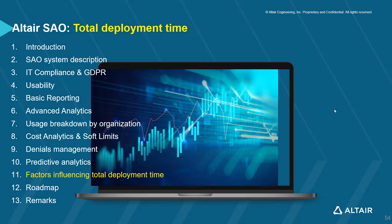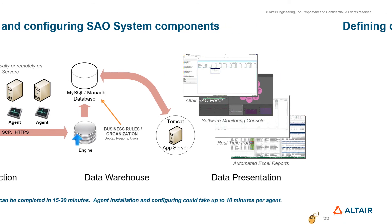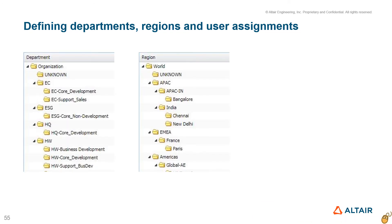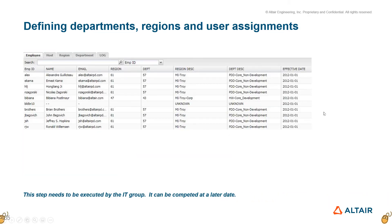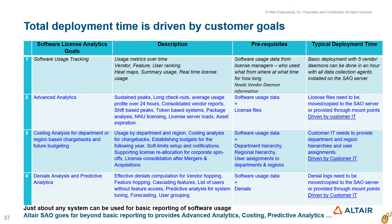A typical server installation and configuration can be completed in 15 to 20 minutes. An agent can be installed and configured in about 10 minutes. Time taken to define departmental and regional hierarchies is driven by the IT group; however, this functionality is not necessary for basic operation and can be added any time after the basic system goes online. HTTPS transport, the SAO messaging system, and predictive analytics can be installed in less than an hour and rolled out incrementally. The simplest implementation can be rolled out in an hour or so, and a little incremental work can unlock the full potential of SAO.